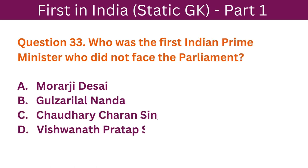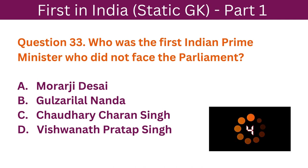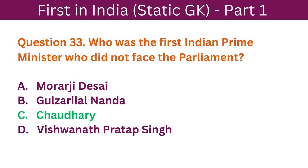Question 33: Who was the first Indian Prime Minister who did not face the Parliament? A. Morarji Desai. B. Gulzarilal Nanda. C. Chaudhary Charan Singh. D. Vishwanath Pratap Singh. The correct answer is C. Chaudhary Charan Singh.